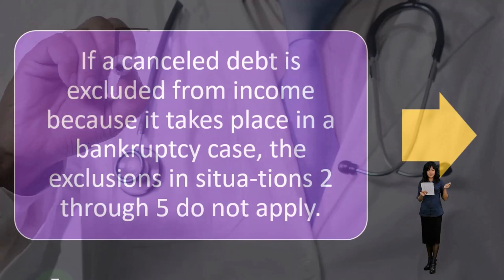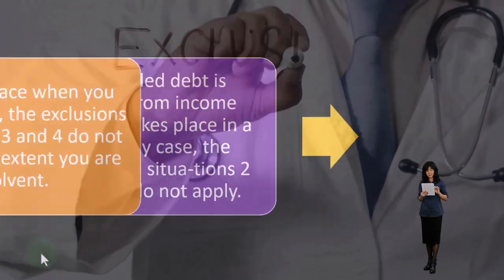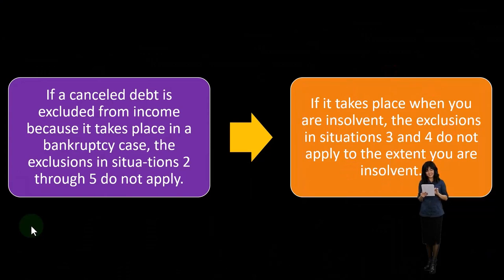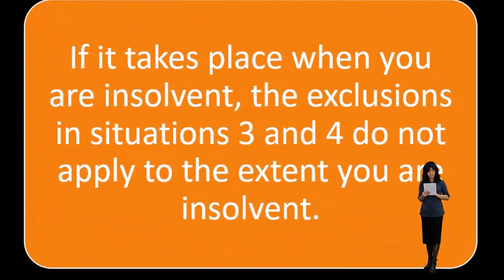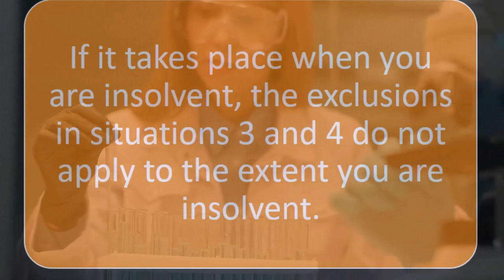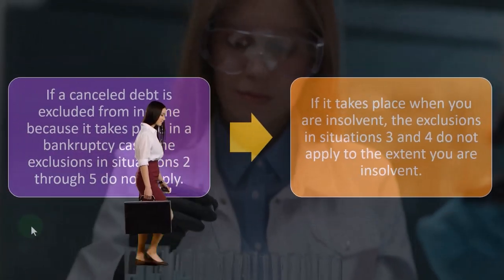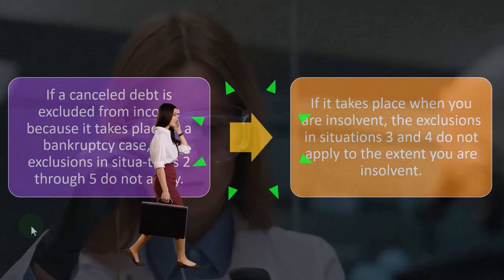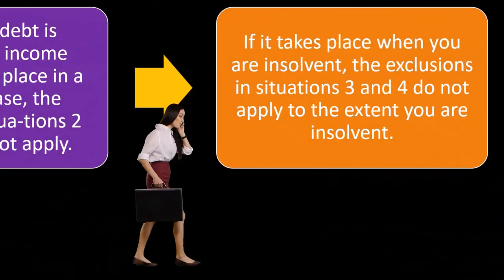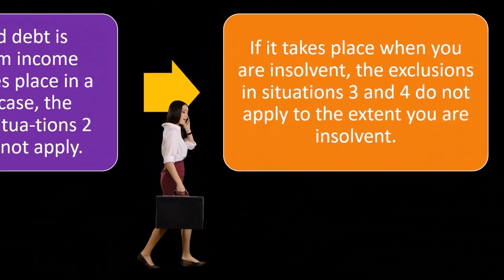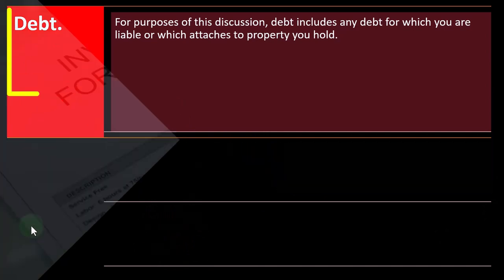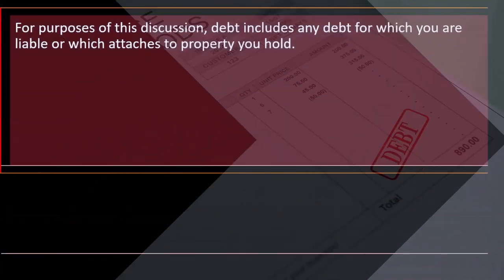If a canceled debt is excluded from income because it takes place in a bankruptcy case, exclusions two through five do not apply. If it takes place when you are insolvent, exclusions three and four do not apply to the extent you are insolvent. Make sure to research your options: can you negotiate without going through bankruptcy? If bankruptcy is necessary, consider which type — Chapter 7, Chapter 11, etc. — is most appropriate.